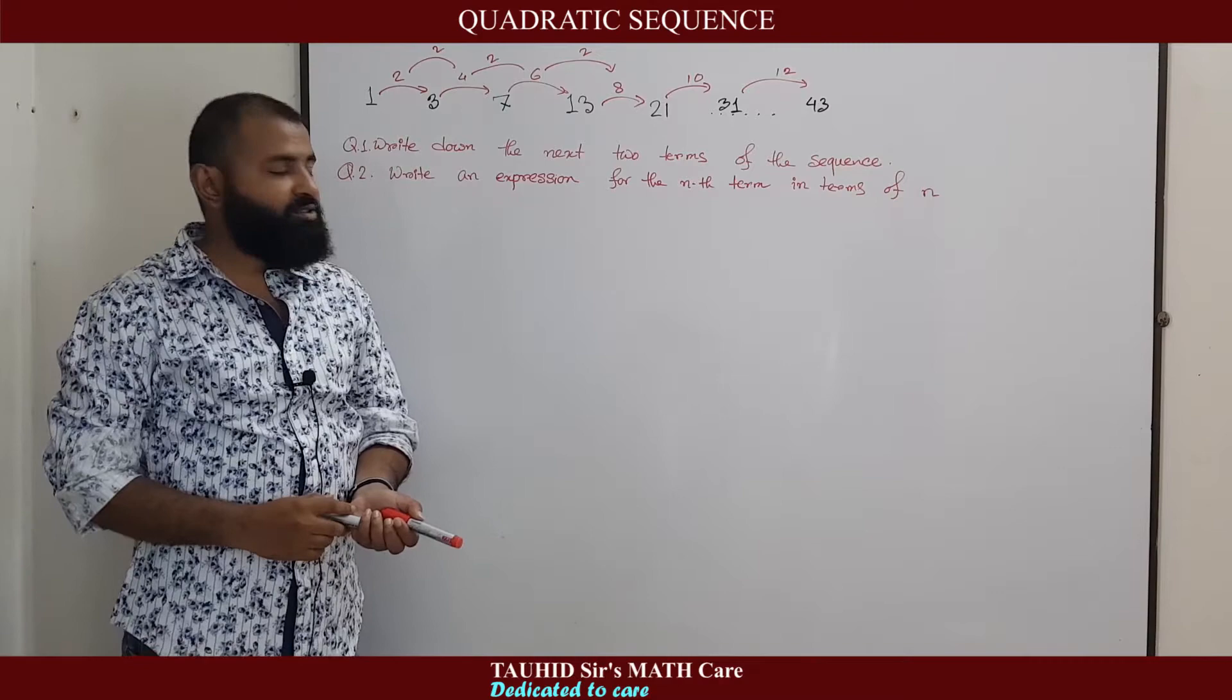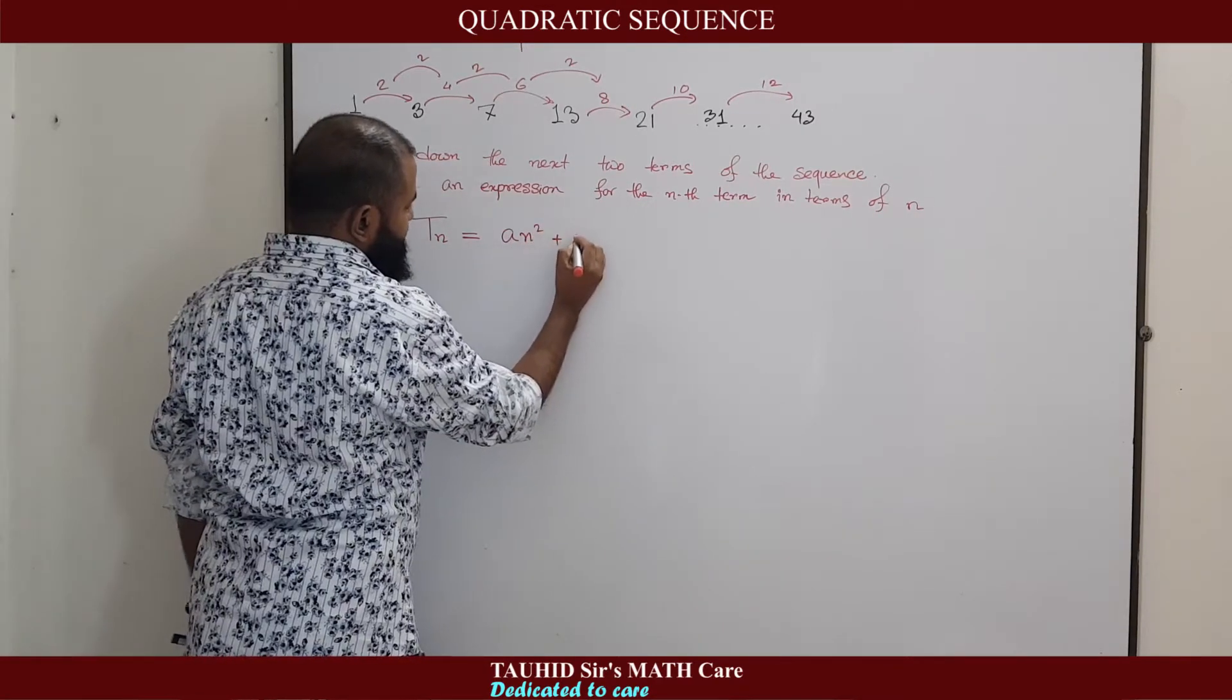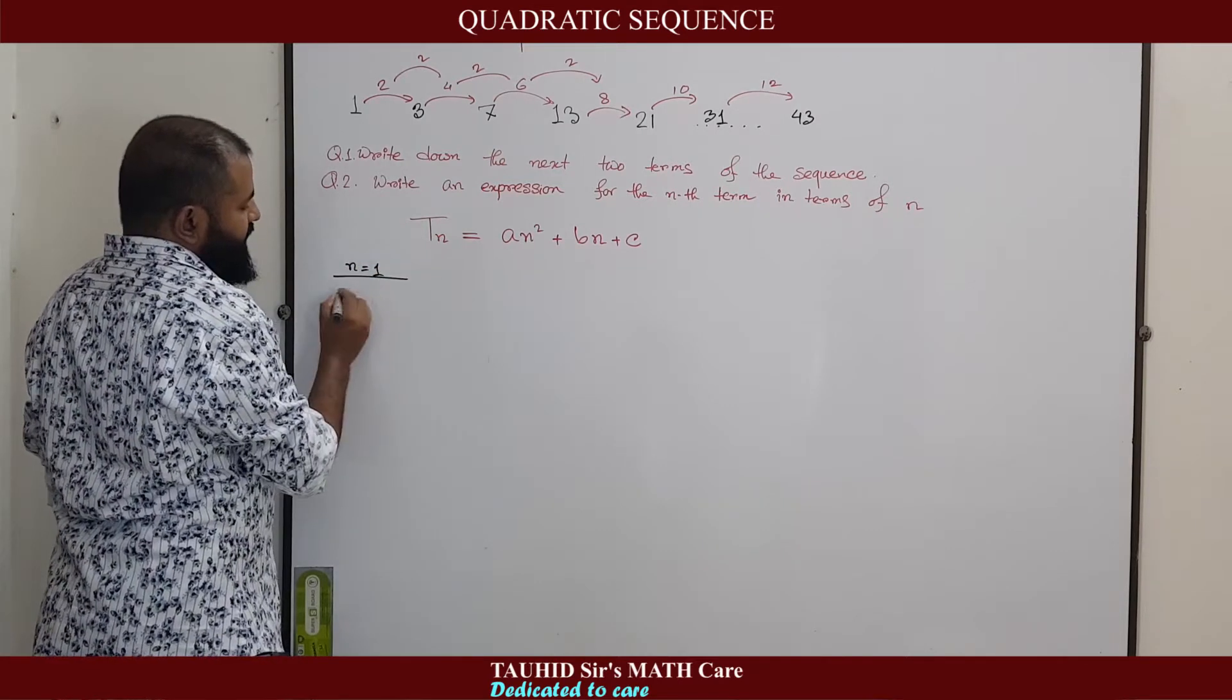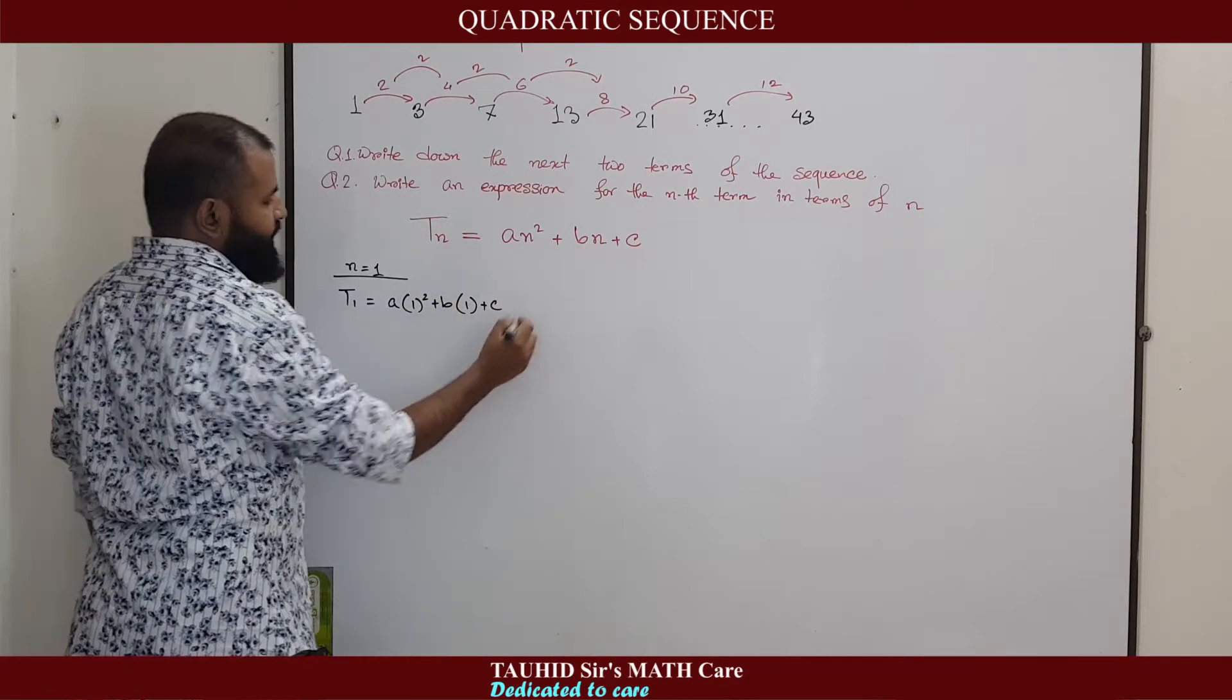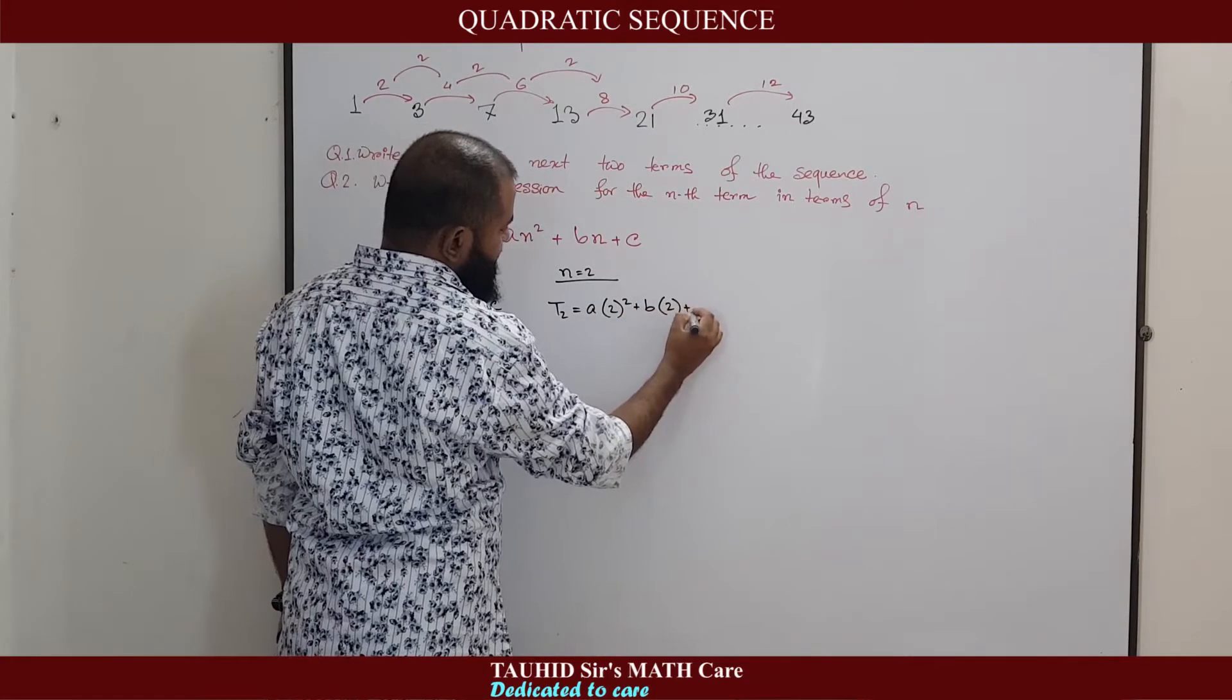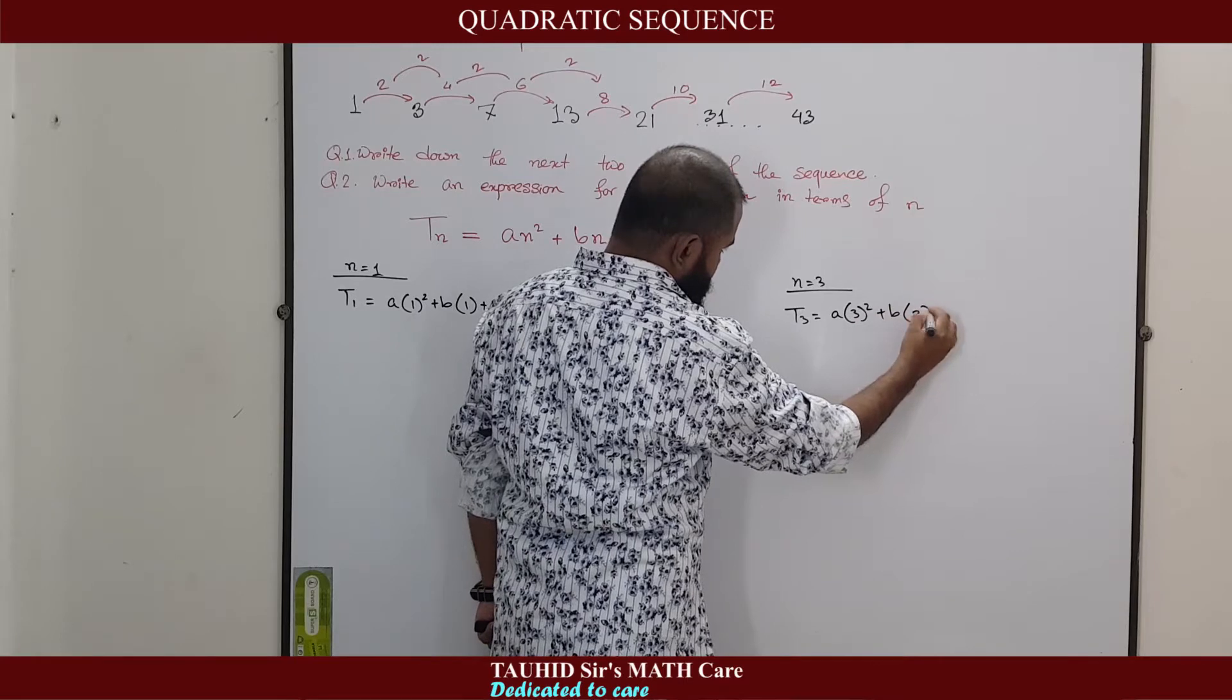Now, come to the question of the expression of the nth term. The expression for the nth term will be Tn equals to An² plus Bn plus C. Here, nth term is expressed by Tn. Now, for n equal to 1, T1 equal to A into 1² plus B into 1 plus C. For n equal to 2, T2, second term equal to A into 2² plus B into 2 plus C. For n equal to 3, T3 equal to A into 3² plus B into 3 plus C.